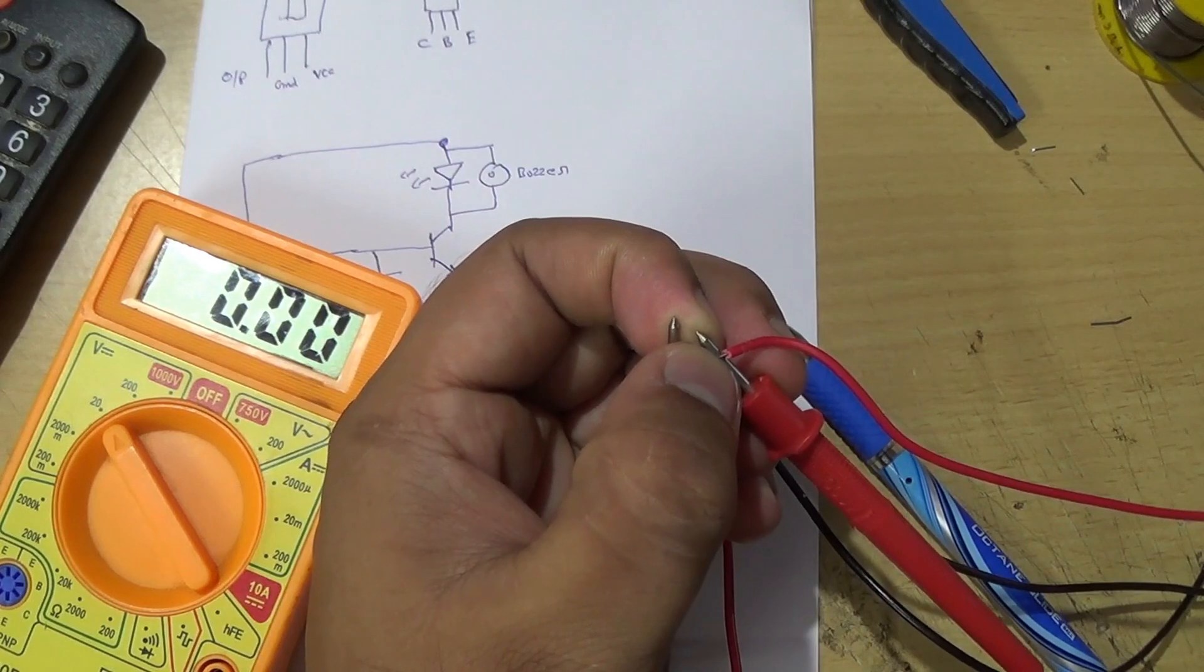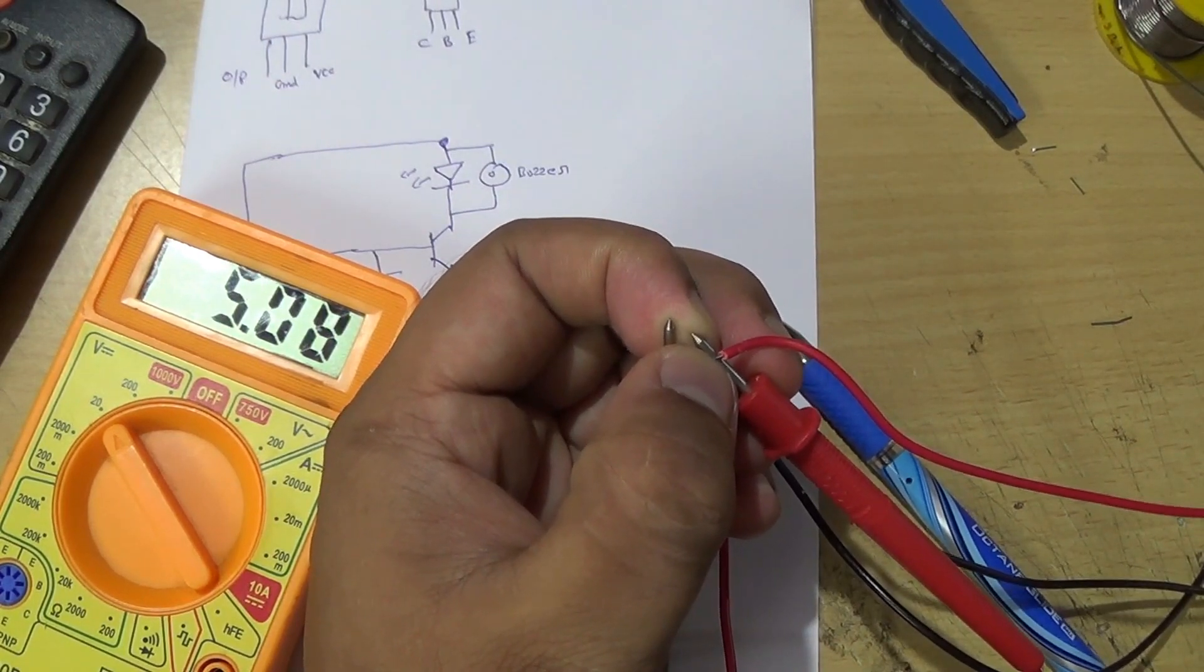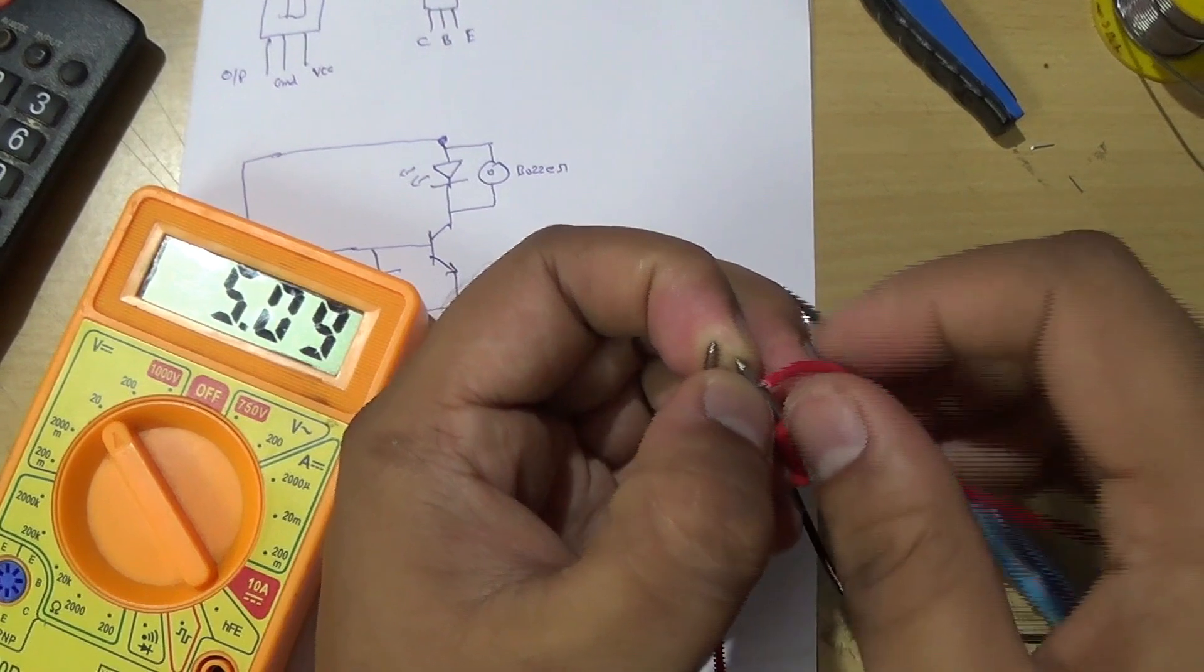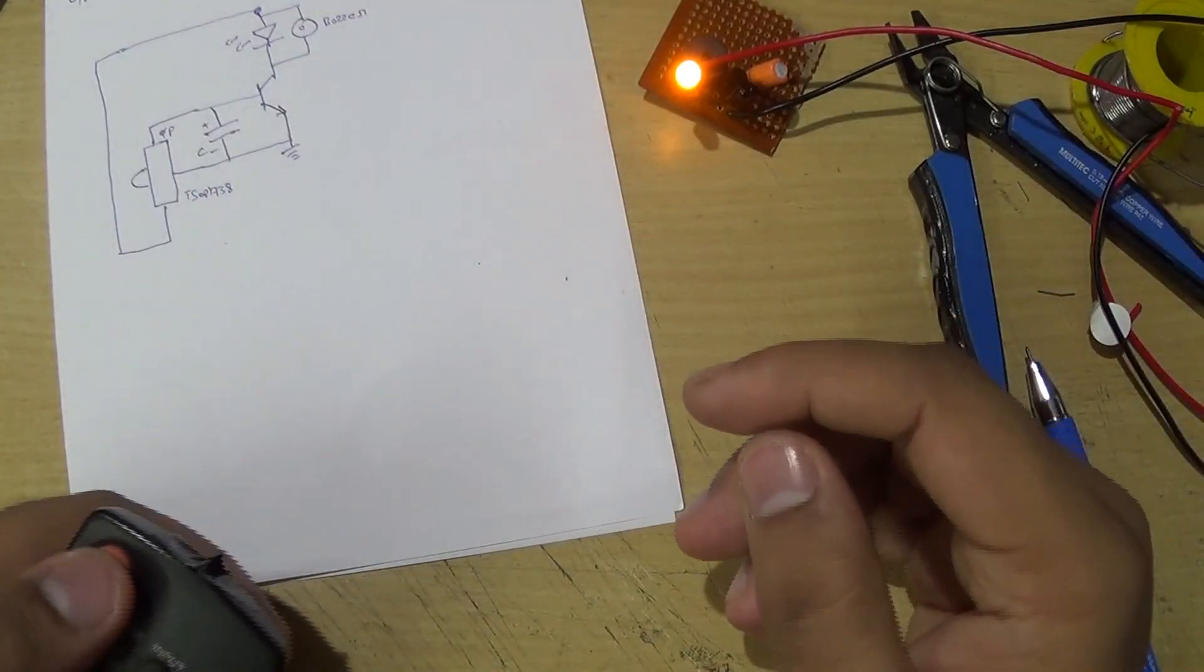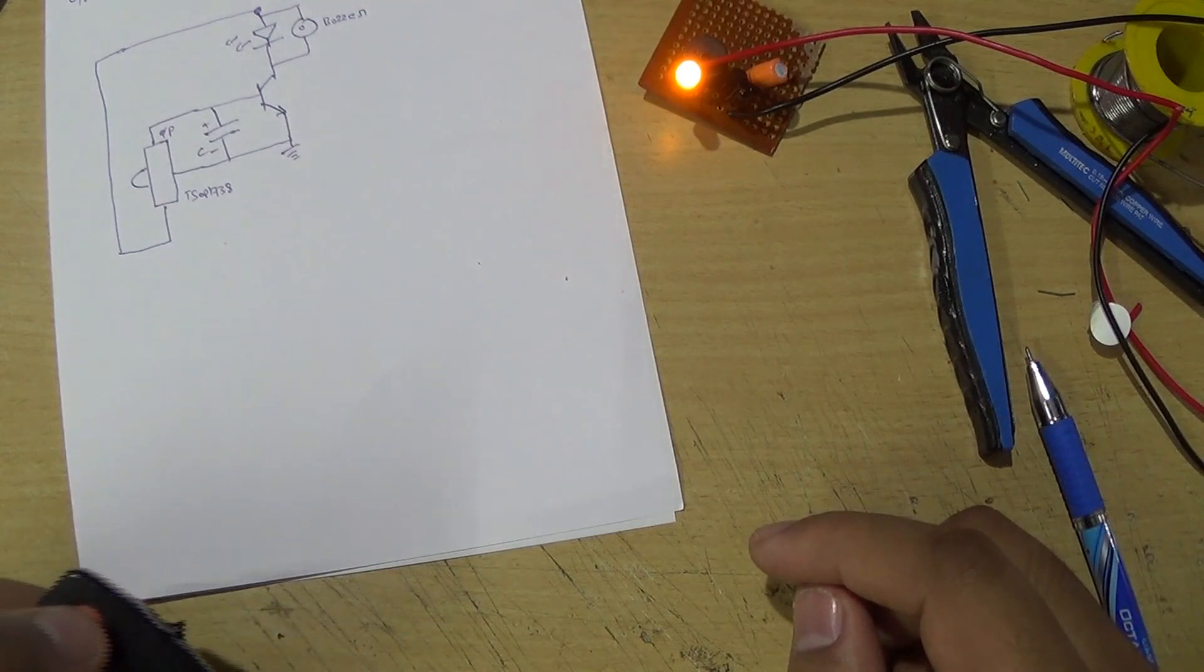Let us see the input voltage. I am giving 5V supply. You can use mobile charger which gives 5V power supply. So now there is no IR light, so it is continuously switched on.